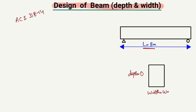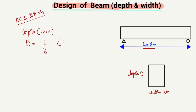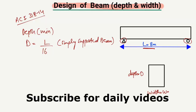How can we find the minimum depth and width requirement for a simply supported beam? According to the ACI code, the minimum depth is equal to the length divided by 16. This formula is valid only for the simply supported beam — like the one we see here — where there are two supports: a hinge support and a roller support.